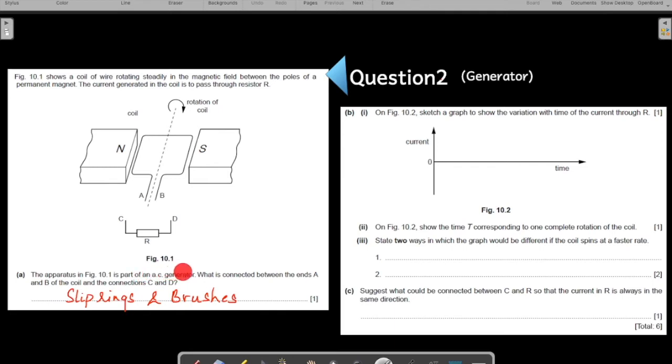Here in the question itself, they say that is an AC generator. So how does the graph of the current for an AC generator look like? It is a sinusoidal curve. So you can draw a curve something like this. You always you can extend it beyond. It should be a sinusoidal curve.